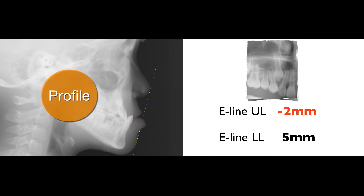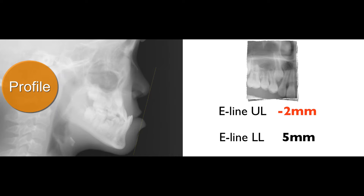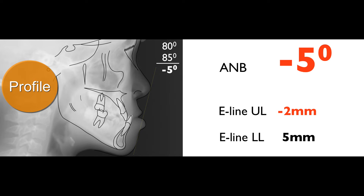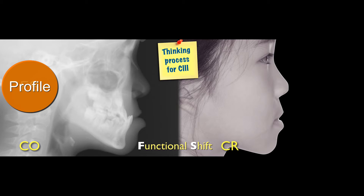The second procedure, we look at the ceph. The ceph will show you that the lip is pretty poor — this is a concave profile. On top of that, the ANB angle is minus 5, which means severe skeletal Class 3. So how do you fix it?